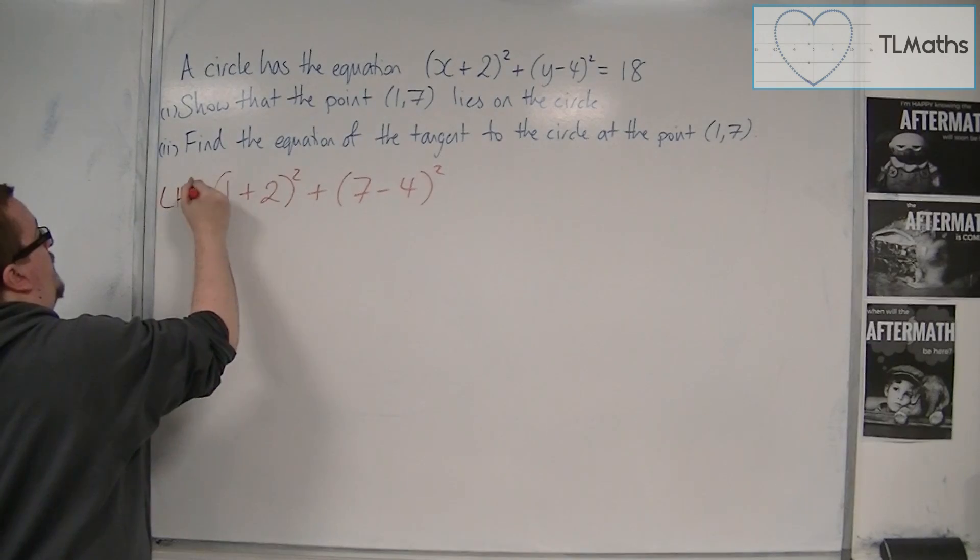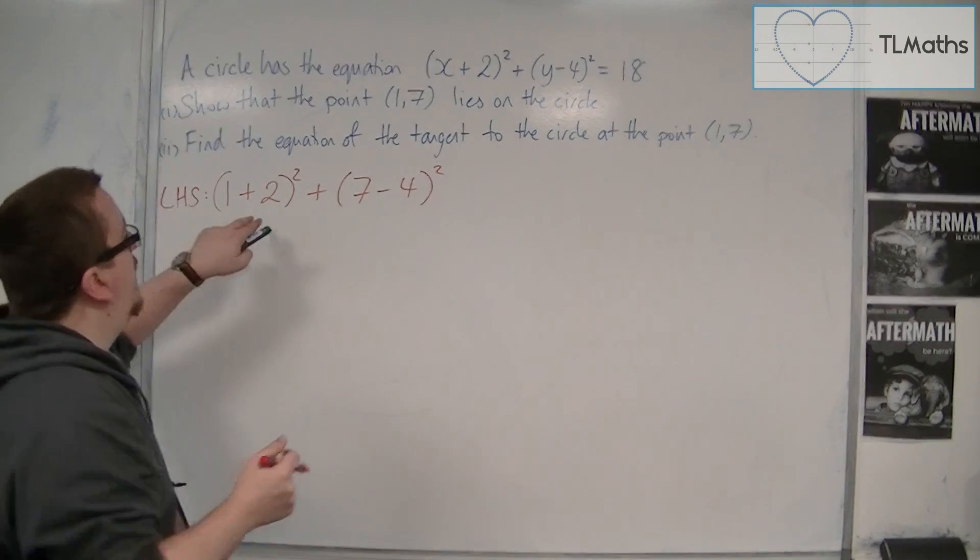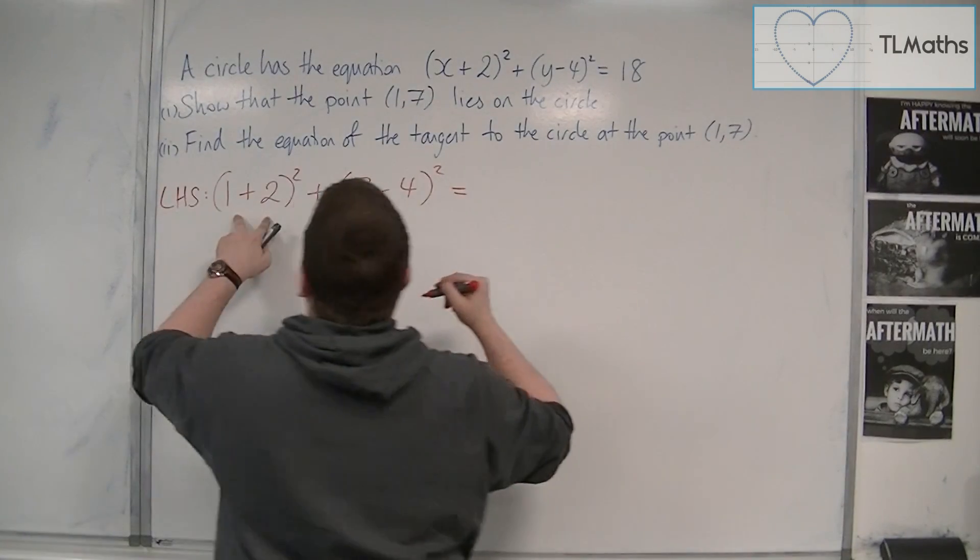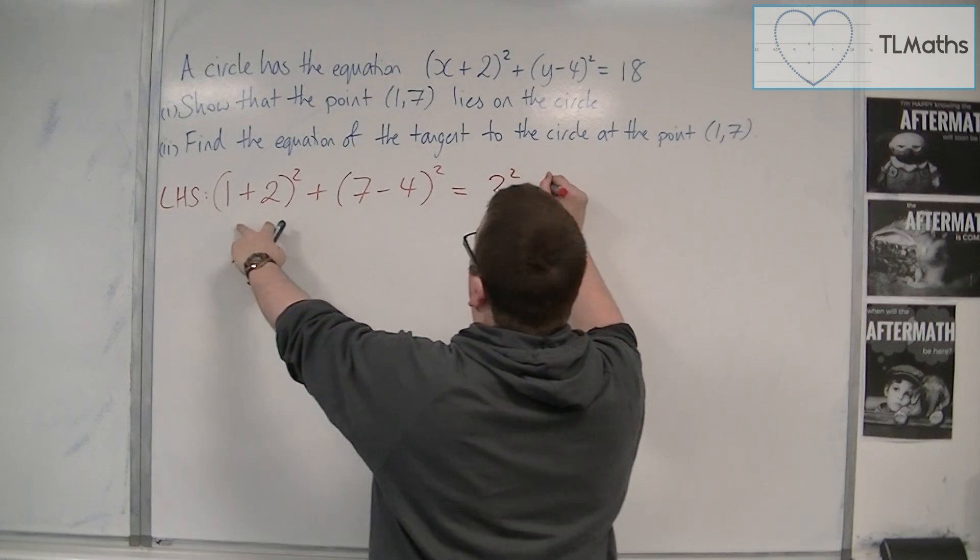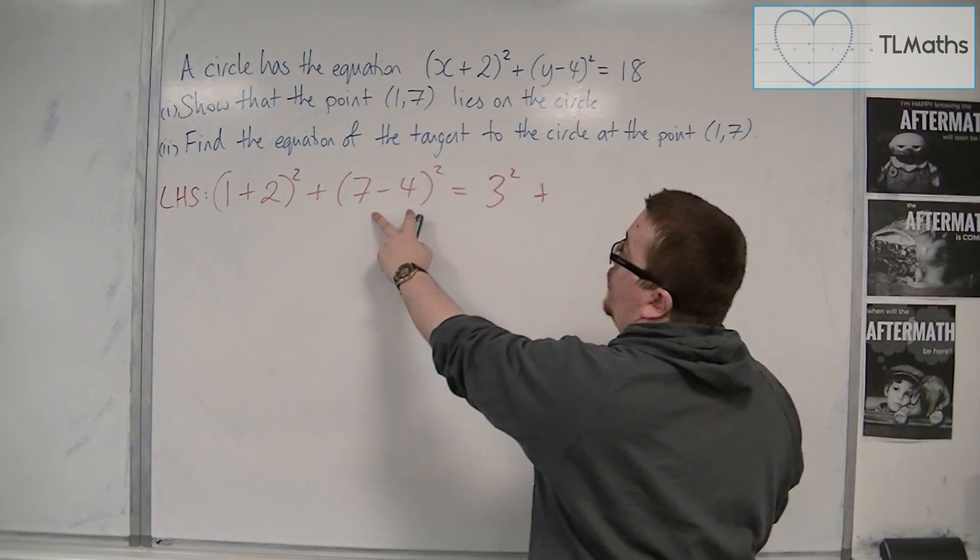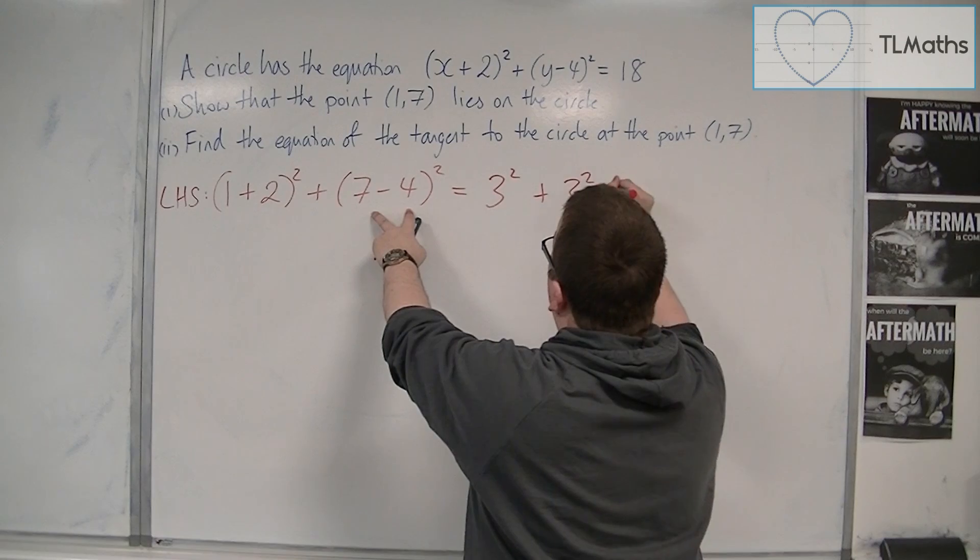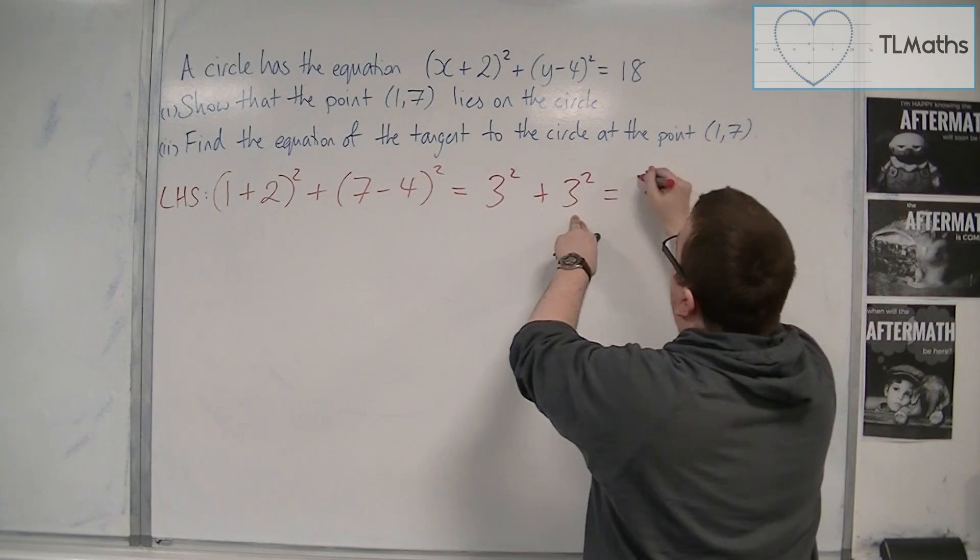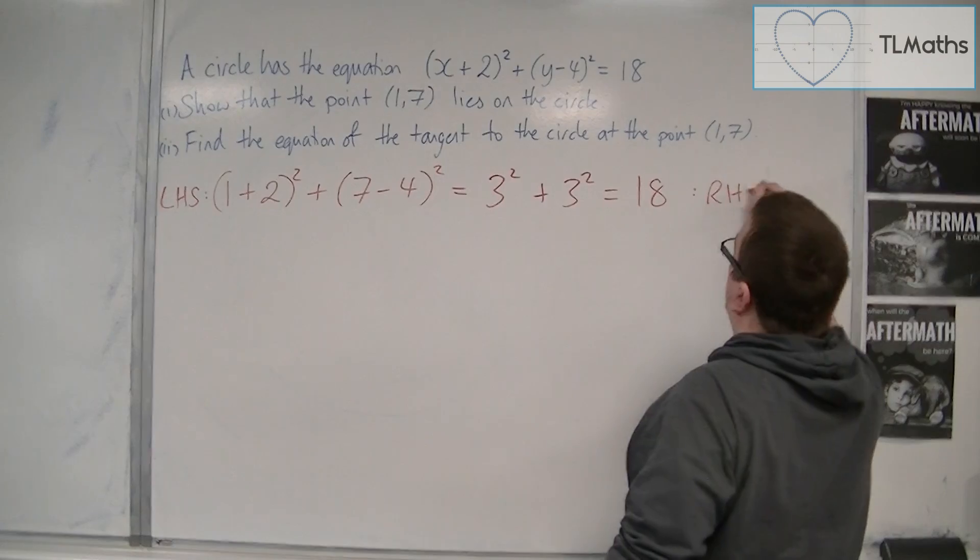So we're just looking at the left hand side here. We're going to get (1 + 2)², so 3², plus 7 take away 4, so that's 3, so 3² again. So 9 and 9 equals 18, so that's the right hand side.